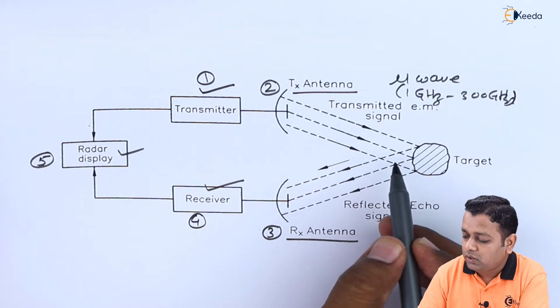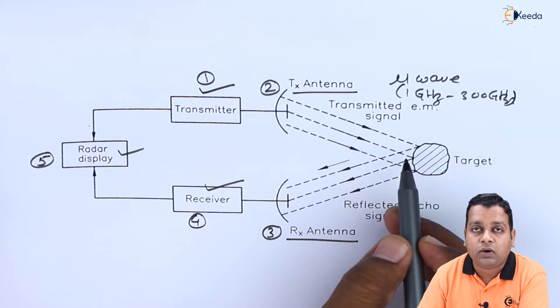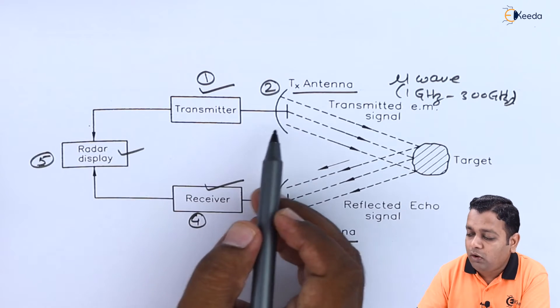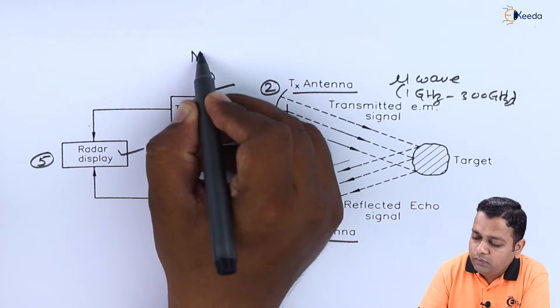For the microwave, if you go for the higher order values of the frequency, then the corresponding echo produced due to the reflection will be a very clear one, giving us accurate information. The transmitter section for generation of this microwave signal is most possibly making use of magnetrons.